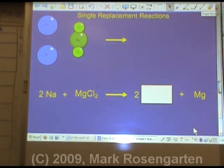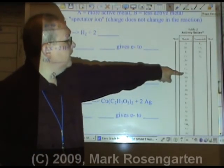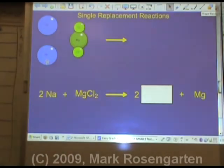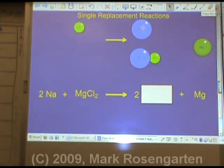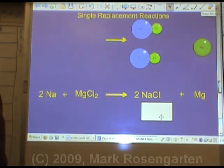As our example of single replacement reaction, we've got two sodiums and a magnesium chloride. The sodium is more active than magnesium. Therefore, the sodiums will take magnesium's place and magnesium will go off by itself, leaving sodium bonded to chloride and another sodium bonded to chloride, giving you that single replacement reaction.